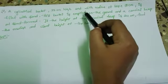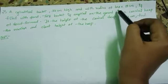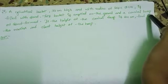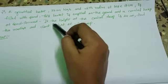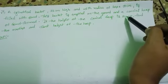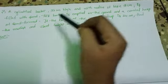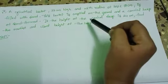This bucket is emptied on the ground and a conical heap of sand is formed. The height of the conical heap is 24 cm. Find the radius and slant height of the heap.